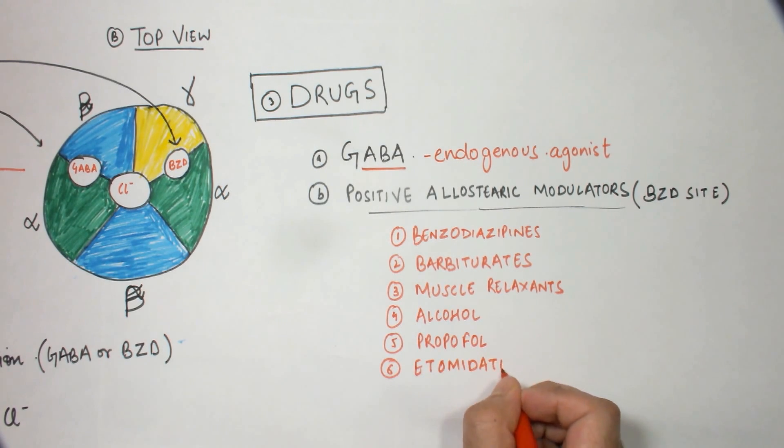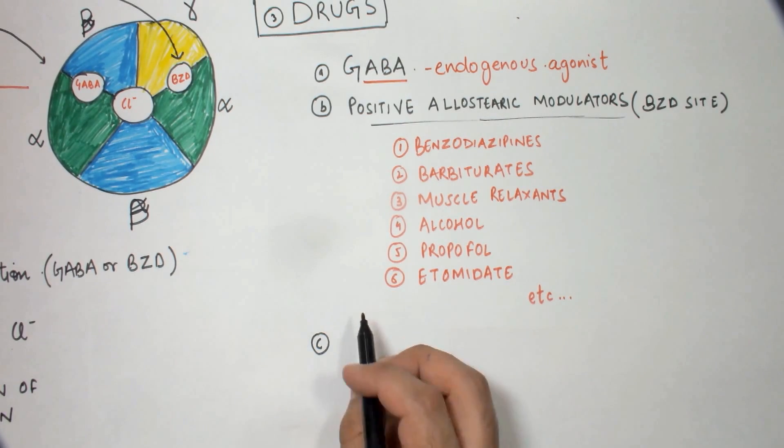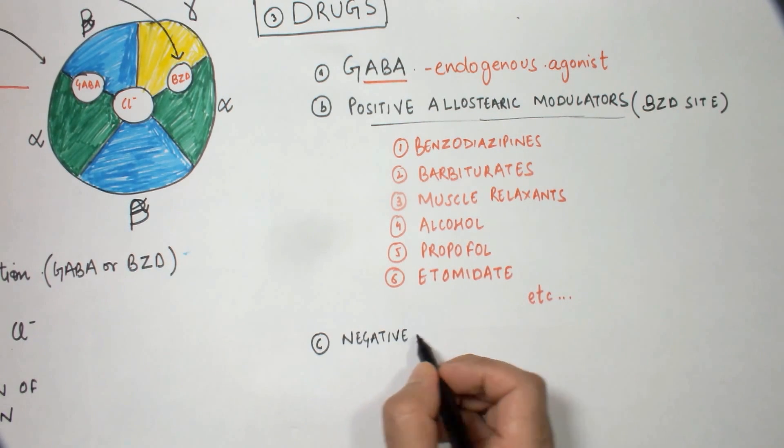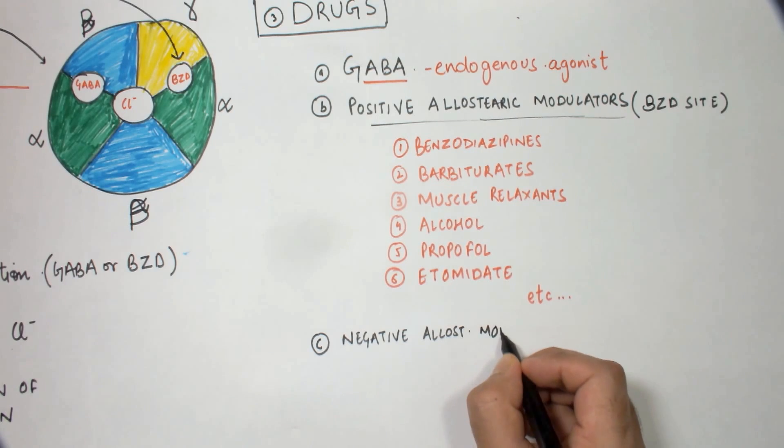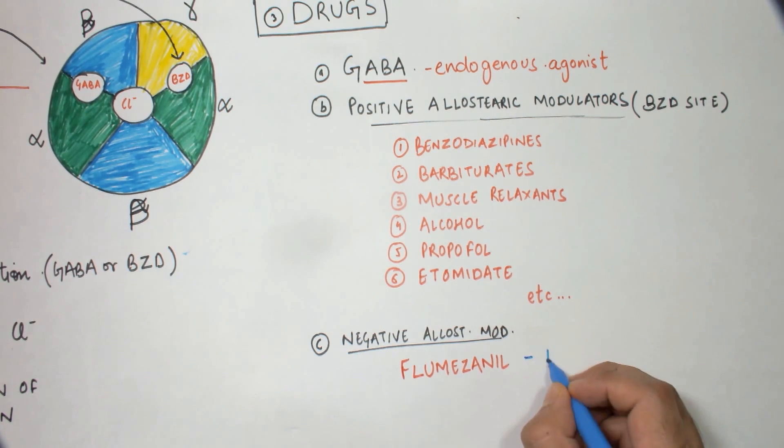The third important category of drugs are the negative allosteric modulators. There are a whole bunch of drugs which are known as negative allosteric modulators, but the one I would like you to remember is flumazenil. This is a very important drug; it blocks the benzodiazepine site, or you can say it is a negative allosteric modulator of the benzodiazepine site. This drug is given in benzodiazepine overdose and also in the reversal of anesthesia.